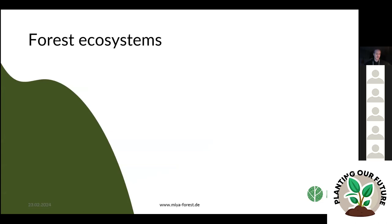Forest ecosystems. The definition of an ecosystem is the biological community of interacting organisms and their physical environment. Forests are really complex systems, so unfortunately I cannot talk about everything — I will, for example, skip animals almost completely, just so you know.